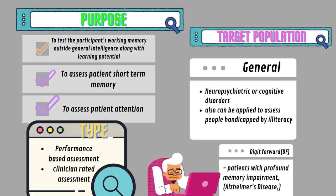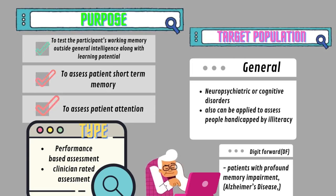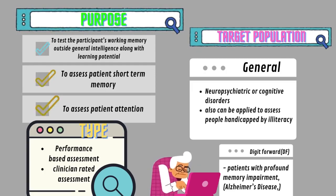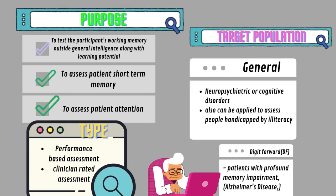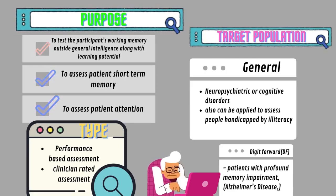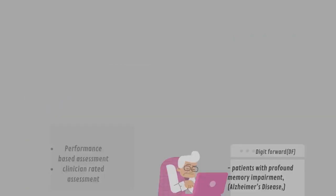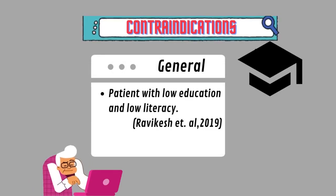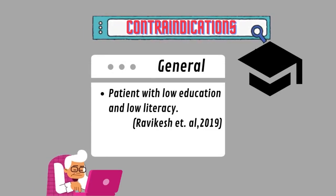The general target population for this assessment is neuropsychiatric or cognitive disorders, including dementia, depression, and mild neurocognitive dysfunction. It can also be applied to assess people handicapped by illiteracy. However, Digit Forwards is specific for patients with profound memory impairment such as Alzheimer's disease. Based on research by Ravi Keshe et al. (2019), Digit Span is questionable for those with lower education and lower literacy, and future research is needed.